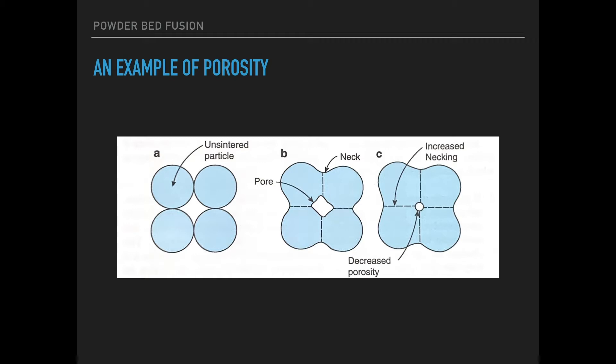You'll notice that we start out with the round balls of the unsintered particle. And then as it heats up, it kind of connects as the surface tension breaks and it creates this inside pocket, this pore. And then as it continues to get more and more merged, you have a smaller and smaller pore. And so porosity can be a real problem with this type of additive manufacturing.